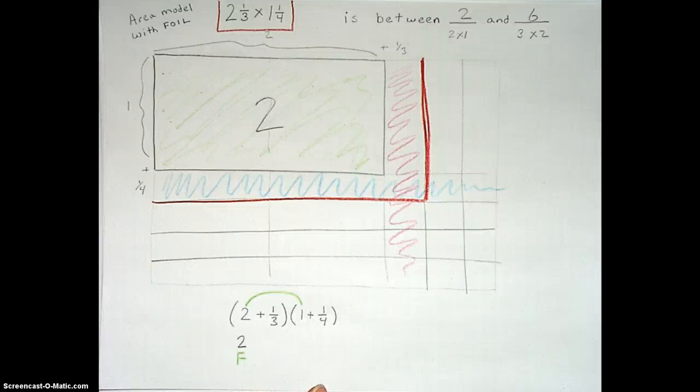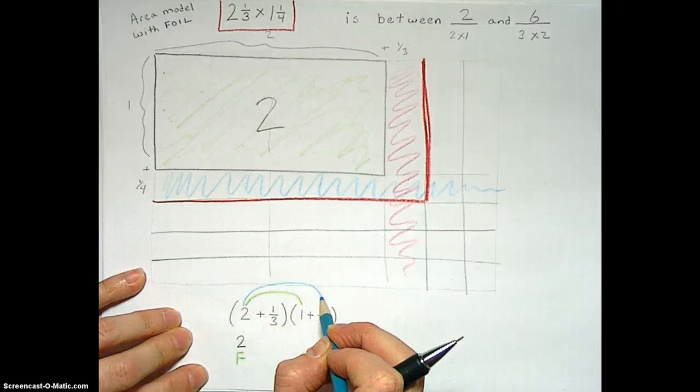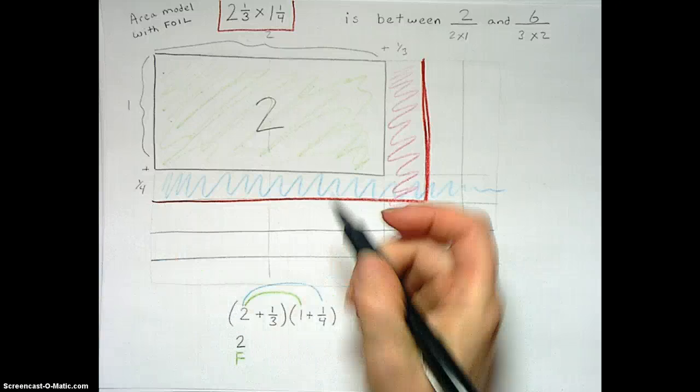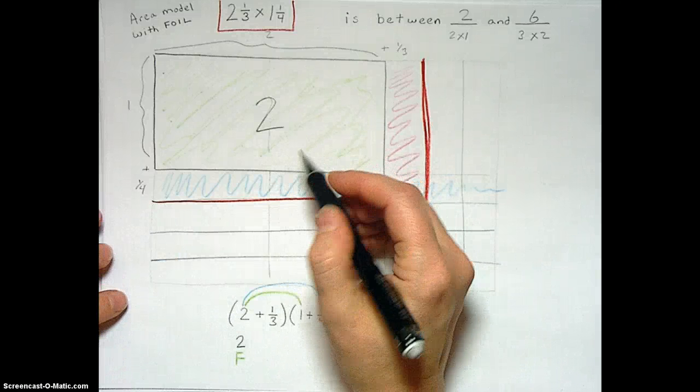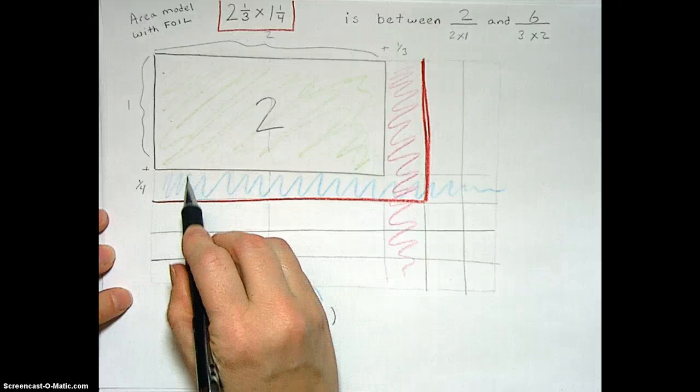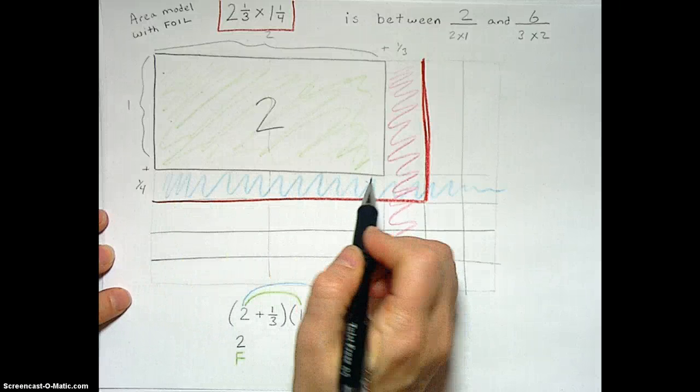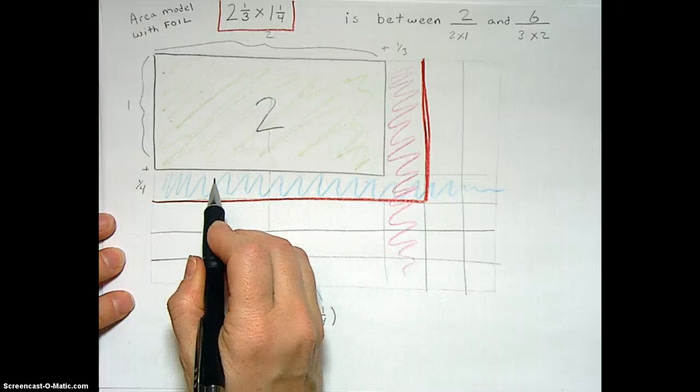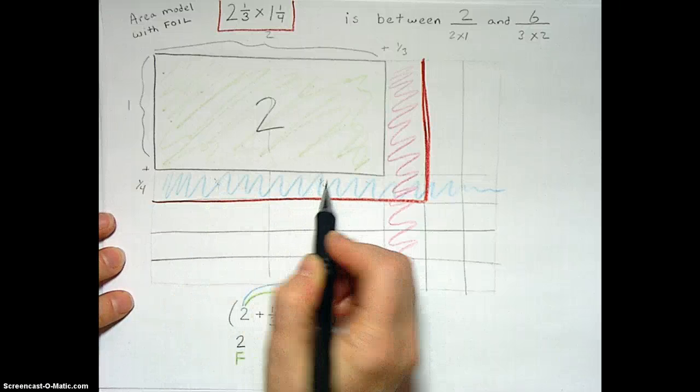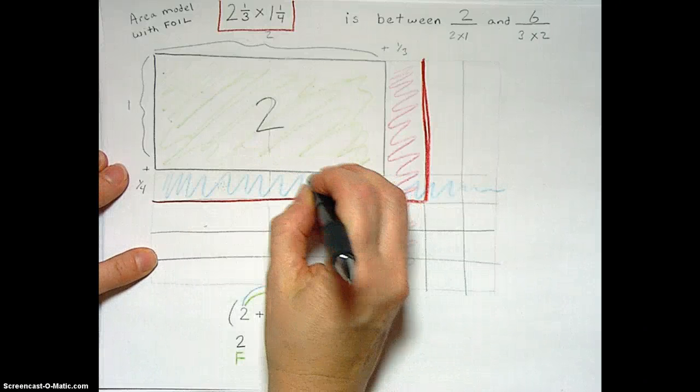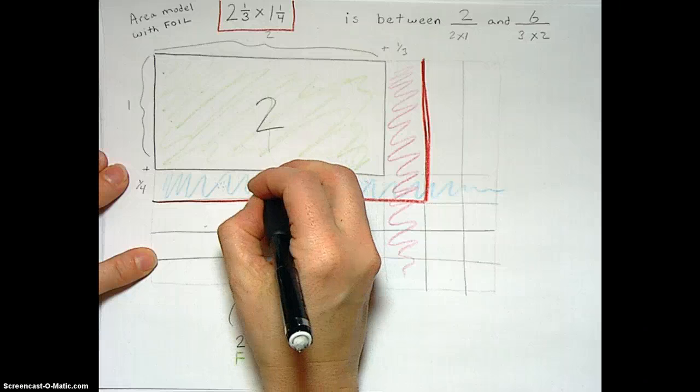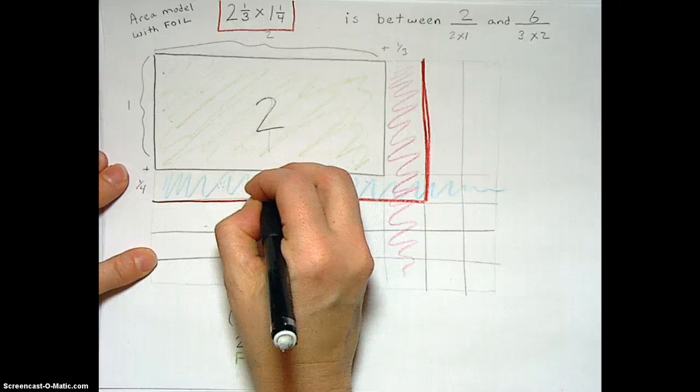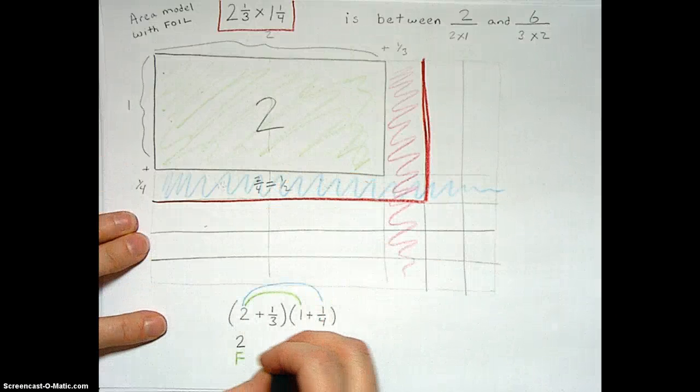Then we're going to do the outer, which is 2 times a quarter, which is blue in this picture. A lot of people need this line right here because this shows us 1 times a quarter and another 1 times a quarter, or 2 times a quarter. I like it better to just say that this entire thing is 2 quarters, which is a half. So that blue area is a half.